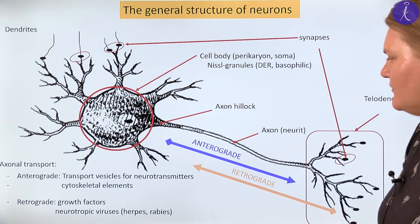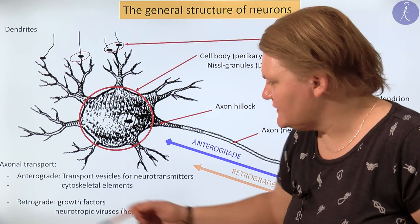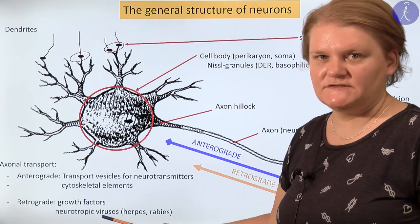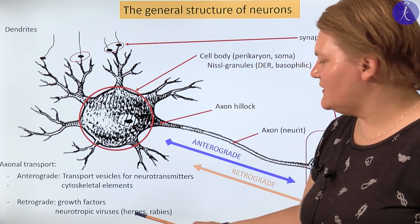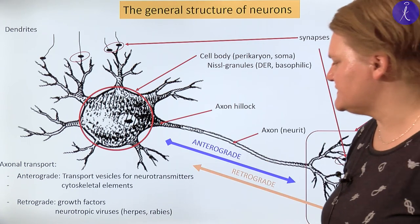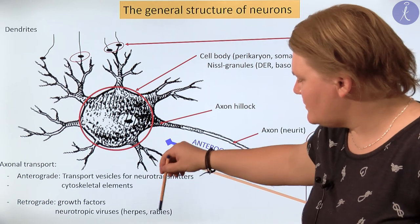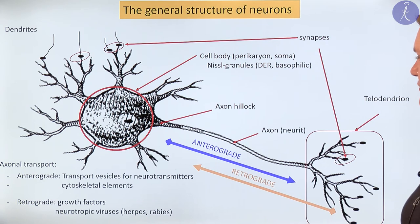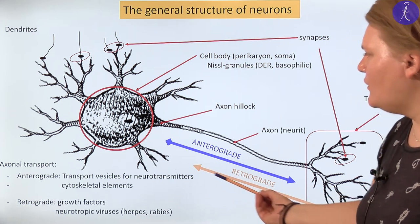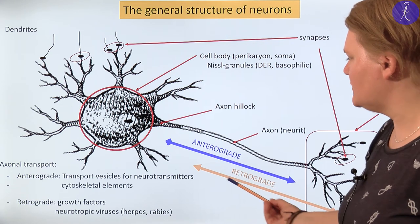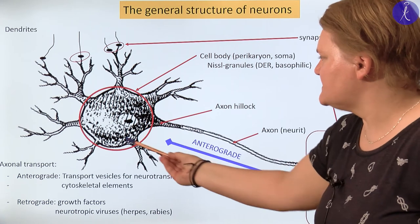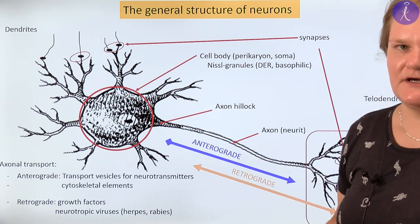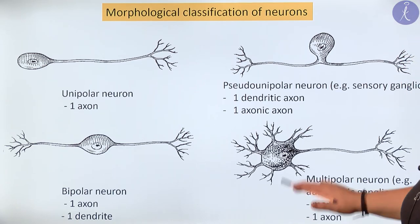Another example of retrograde axonal transport involves neurotropic viruses, which attack the neurons and the nervous system. We usually mention herpes virus and the rabies virus in this context. These viruses use the retrograde axonal transport — flowing backward toward the cell body — and this is how the virus is able to degenerate the nerve cell.